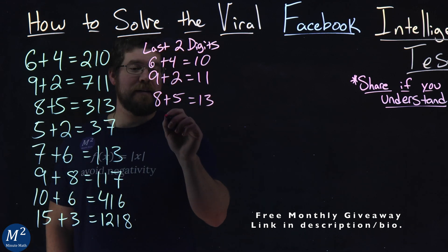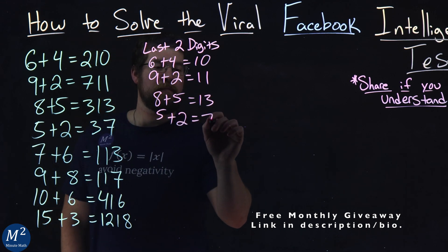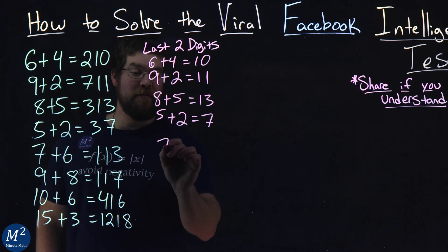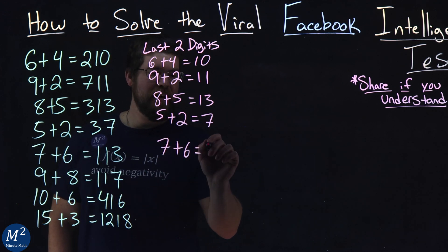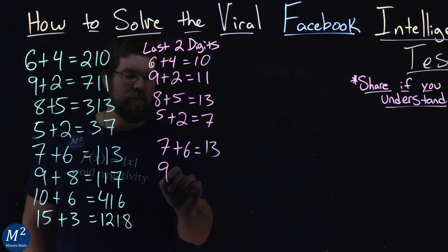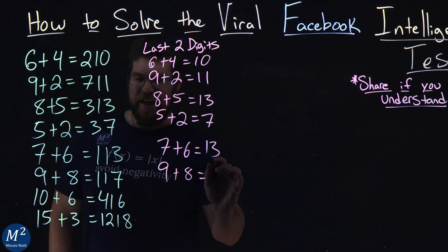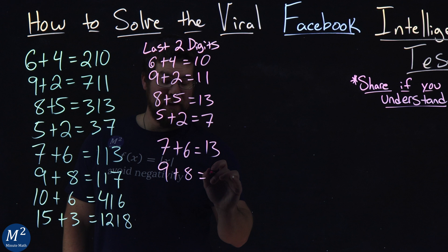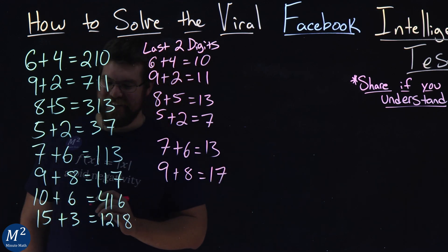And 5 plus 2 is the 7. 6 plus 7 is, or 7 plus 6, flip that around, is the 13. 9 plus 8 equals a 17.